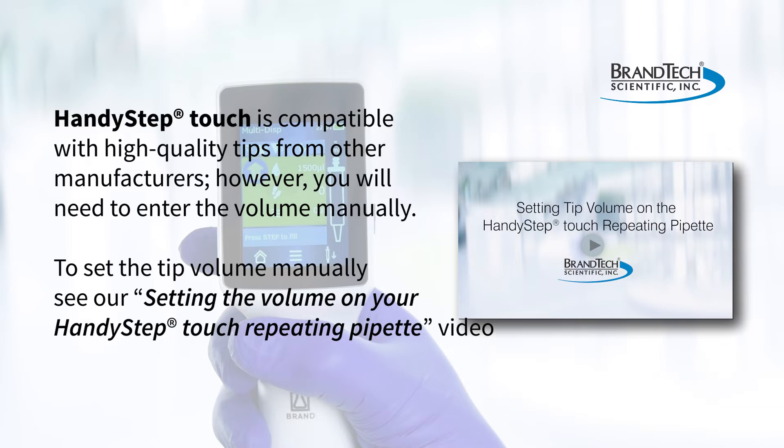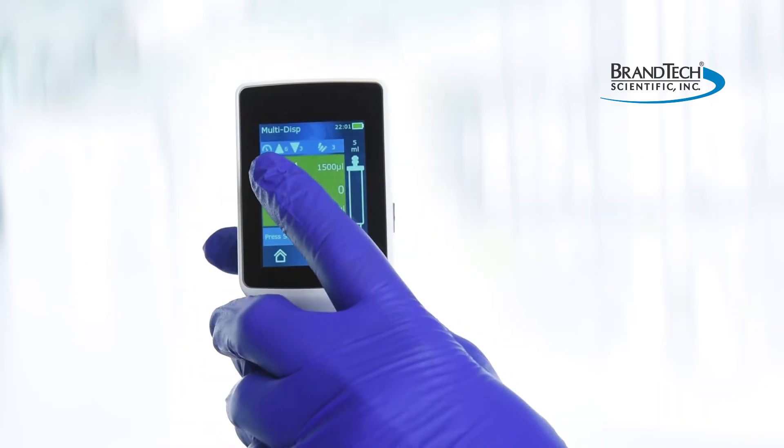To set the tip volume manually, see our setting your volume on your HandyStep Touch repeating pipette video. To set the desired aspirating and dispensing speeds, tap the speedometer icon.